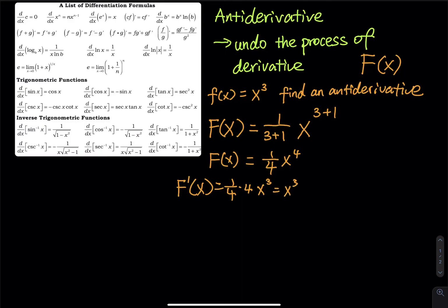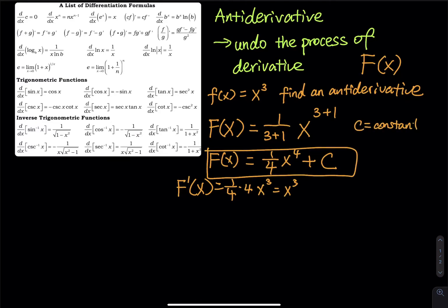But when you find an antiderivative, I want you to do one more thing — this is very important. I need you to add C to it. What is C? C equals a constant value. For example, F(x) could equal (1/4)x⁴ plus 2. When you take the antiderivative, you still get x³, because the derivative of 2 equals 0. So 2, 3, 1000, pi — they are all constant values. A constant value means there is no variable attached to it.